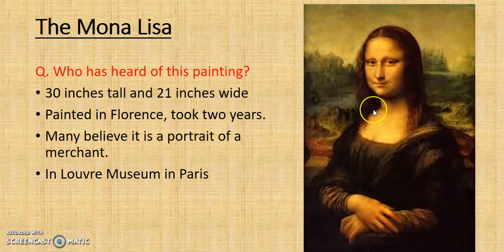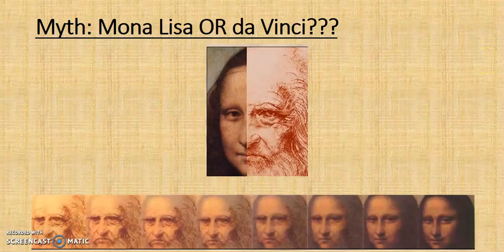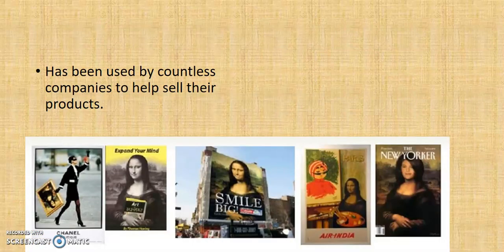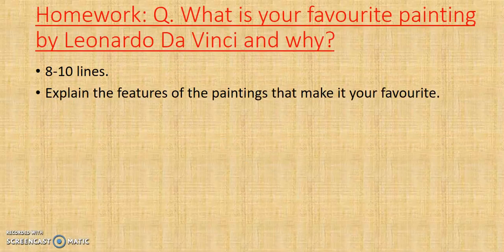And perhaps the one you've all been waiting to learn about — the Mona Lisa by Leonardo da Vinci. The scenery in the background is typical of a renaissance painting. She's 30 inches tall and 21 inches wide, and it took over two years to paint. Many believe it's a portrait of a merchant, and it's best seen in the Louvre in Paris. One of the stories is that it was a self-portrait by da Vinci painted over himself. Da Vinci is used today in marketing for just about every company and industry you could think of. If you're revising this for your exams, you need to write eight to ten lines at least on da Vinci and his paintings.